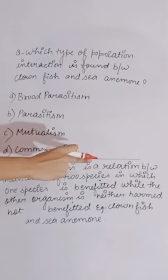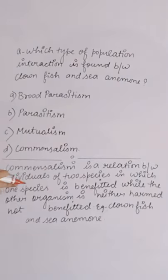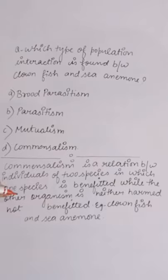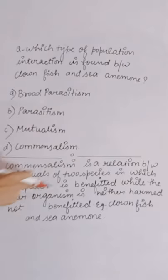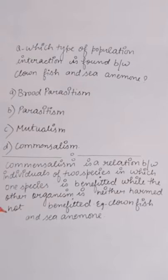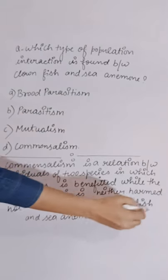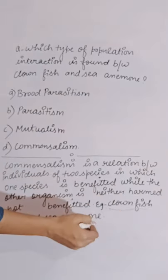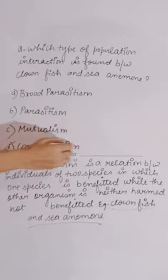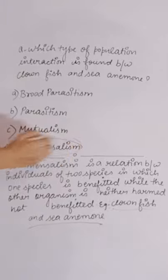Commensalism is a relation between individuals of two species in which one species is benefited while the other organism is neither harmed nor benefited. An example is clown fish and sea anemone. So the correct answer is D, that is commensalism.